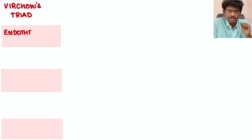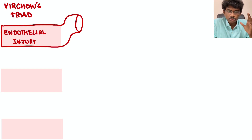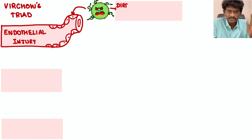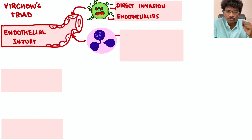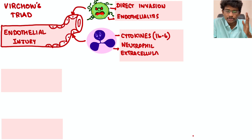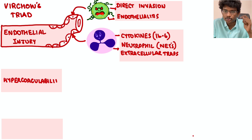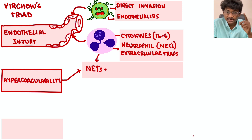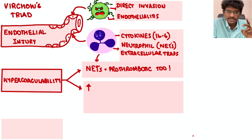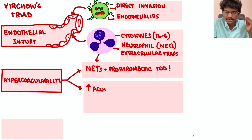First, according to Virchow's Triad, the first factor is endothelial injury. There is evidence that the coronavirus directly affects the endothelium, causing endothelitis and thus favoring thrombosis. Next are neutrophils — they secrete lots of cytokines like interleukin-6, and the condensed chromatin of dead and dying neutrophils irritates the endothelium, causing endothelial injury. These are neutrophil extracellular traps, or NETs, responsible for the hypercoagulable state in COVID.